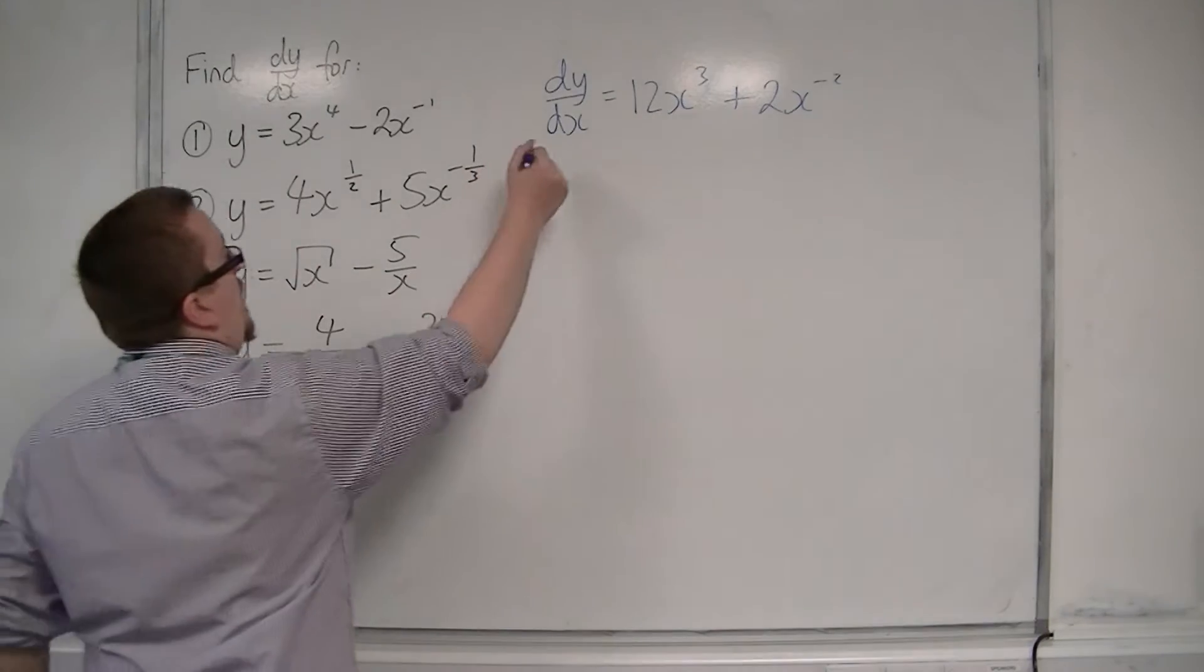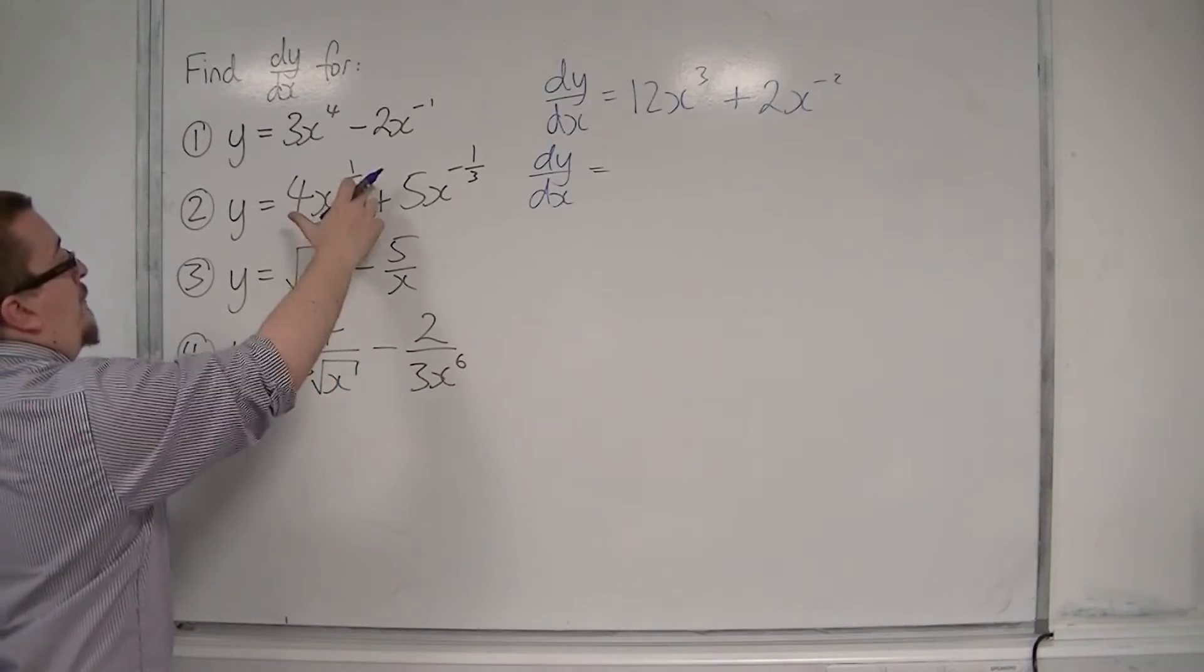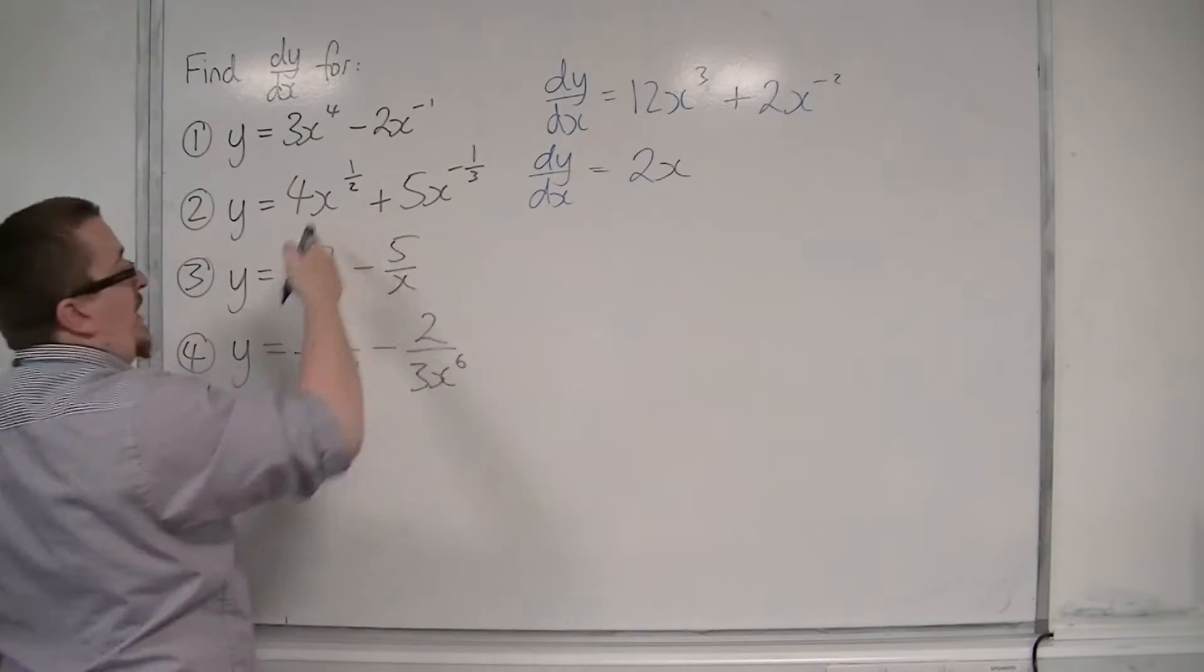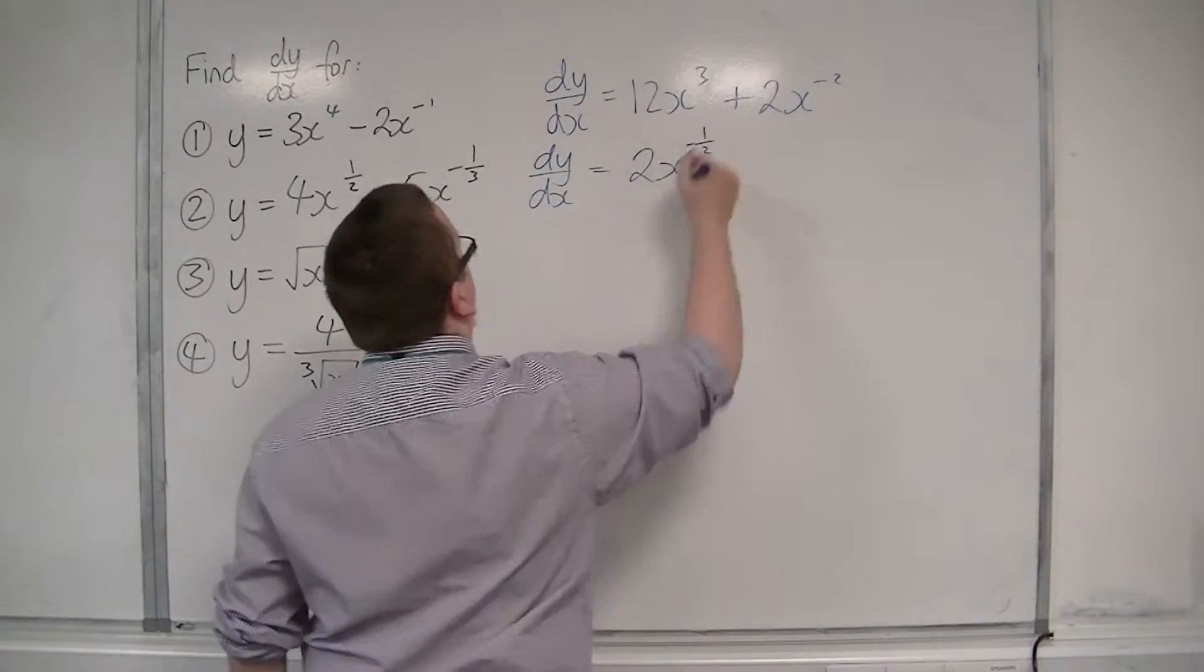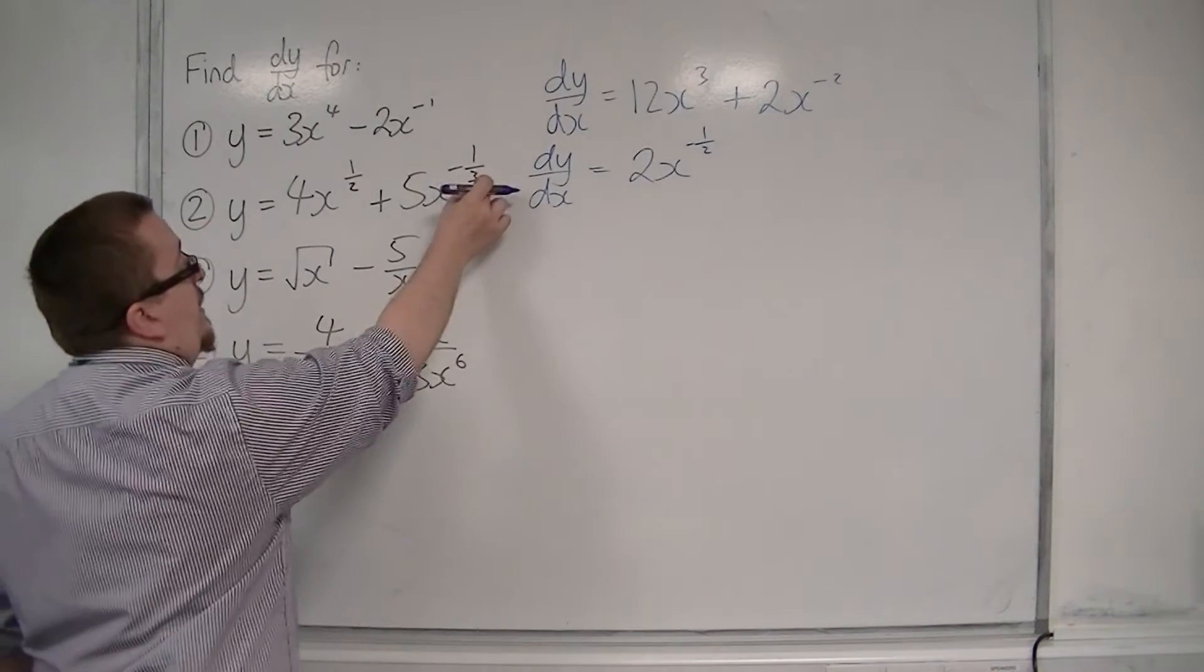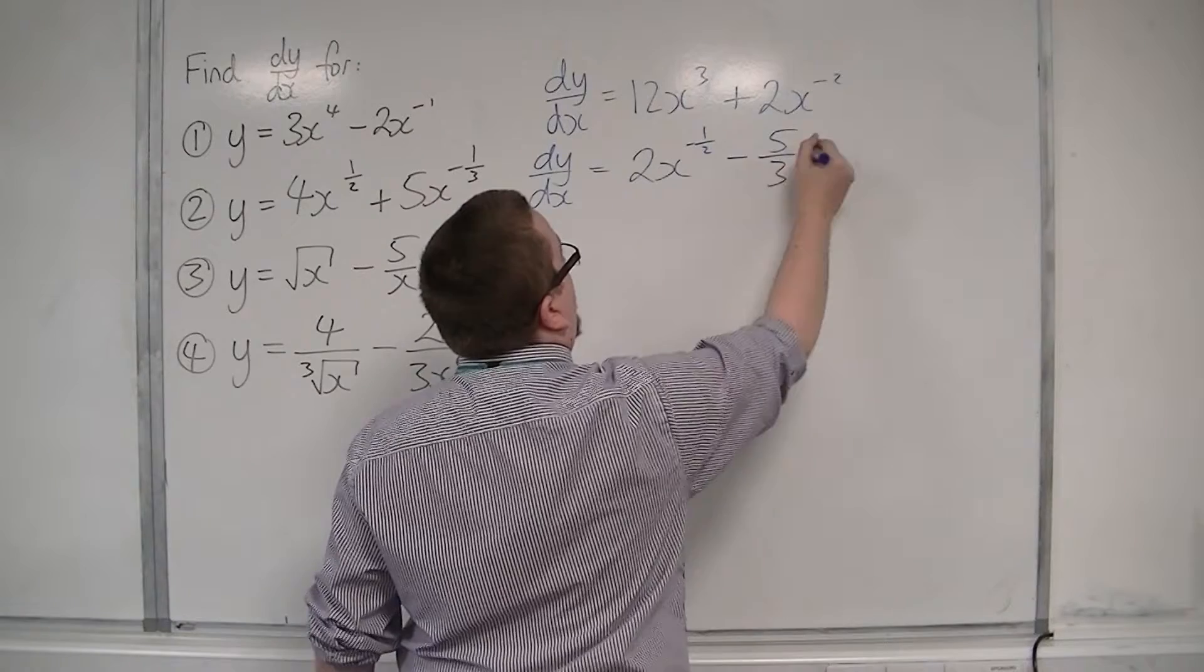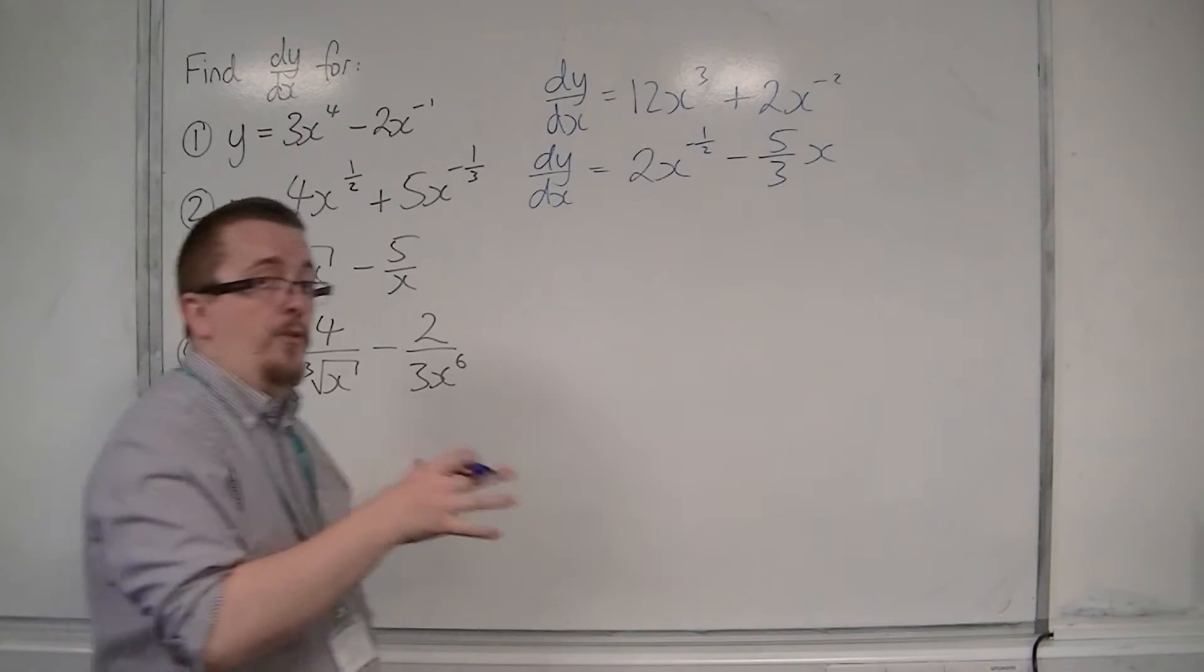Let's look at the second one. So the half comes down to the front, so 4 lots of a half is 2 and then take 1 off the power, so a half take away 1 is minus a half. And then the minus a third will come down to the front, so we now have minus 5 thirds x and then take 1 off the power, so minus a third take away 1 is minus 4 thirds.